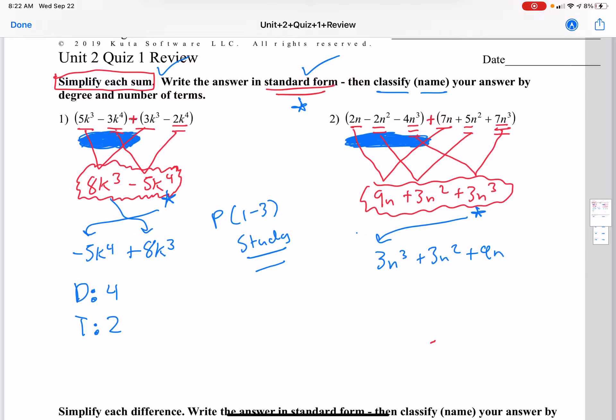Which means if the degree is 4, if you look on pages 1 through 3 right here, you know that means it's a quartic binomial. So make sure you study those terms before your quiz tomorrow.